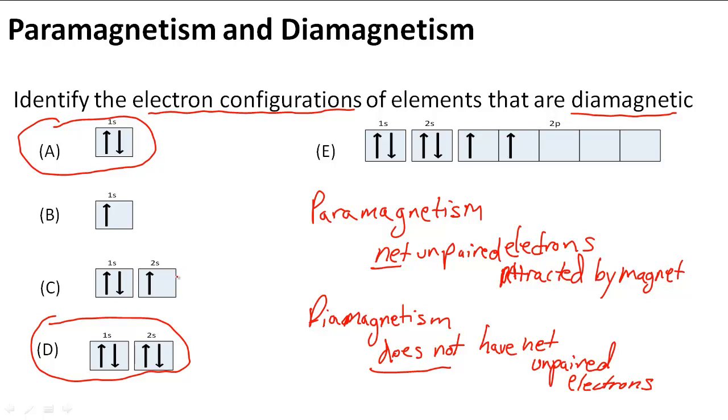C would be a perfect example of paramagnetism. Notice that it does have net unpaired electrons, so that would mean it's paramagnetic and could be attracted by magnets. Knowing the difference between the two can help you choose the correct orbital diagram.